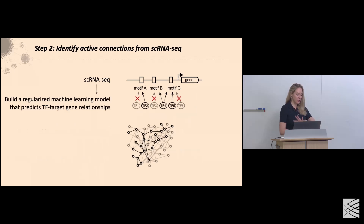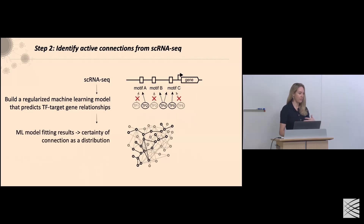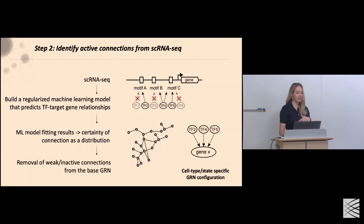In step two, having the base GRN for the species, we identify — for each cell type, for each cluster within your scRNA-seq dataset — which connections in that network are actually active. Kenji builds a regularized machine learning model that predicts transcription factor–target gene relationships. From the ML model fitting results, it presents uncertainty of connection as a distribution, allowing us to remove weak or inactive connections from the base GRN, leaving us with the cell-type and state-specific GRN configuration.